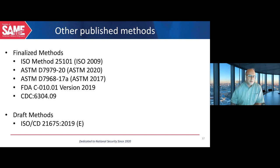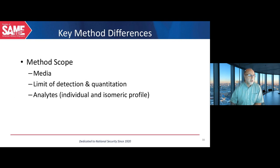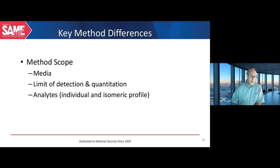Other published methods are available from the International Standards Organization, the American Society for Testing and Materials, the FDA, and the CDC, though these are not commonly used for environmental analysis. Key differences between all these methods include the applicable media or matrix: Methods 537.1 and 533 are for drinking water, while Method 1633 holds promise because it applies to all typical environmental matrices, including groundwater and surface water. Another key difference is the limit of detection and quantitation, which will be a challenge especially with the new drinking water health advisory limits issued recently.